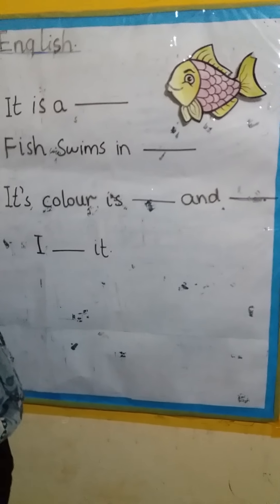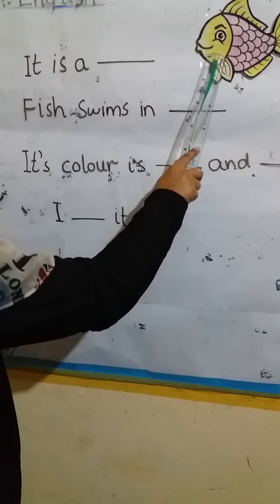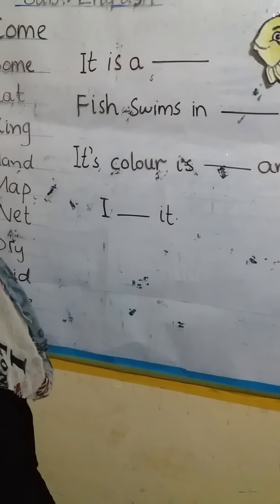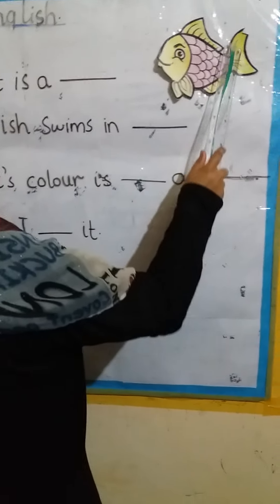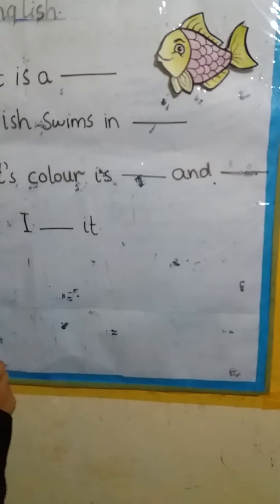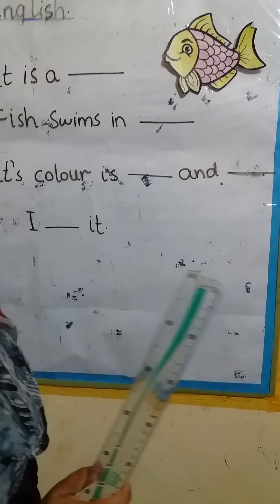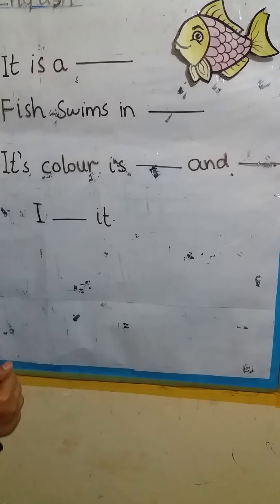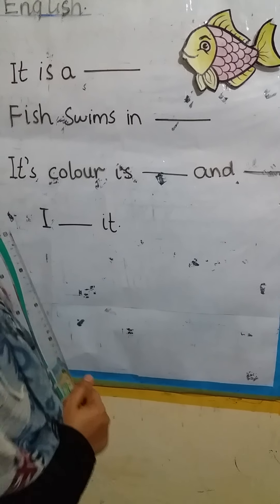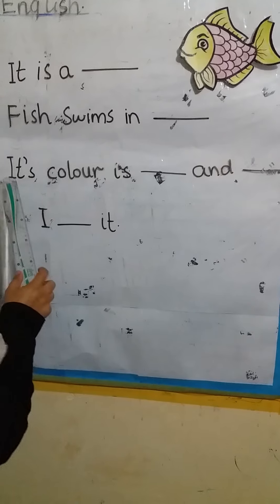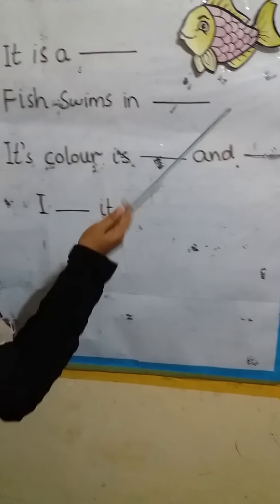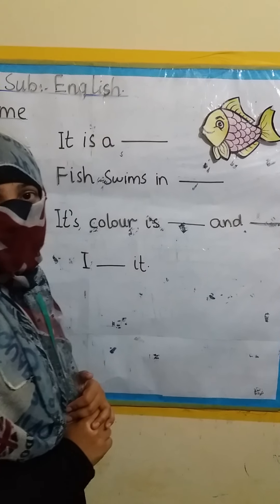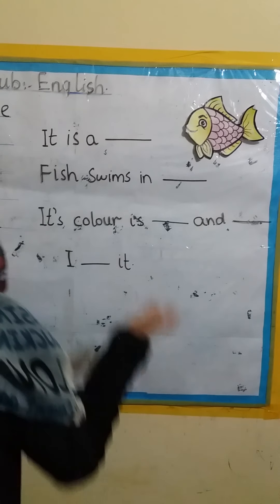You will tell me the color of that fish. Yes, yellow and pink! Okay, the fish has a tail. And where does the fish live? Fish lives in water. Yes, fish swims in water. Its color is yellow and pink.